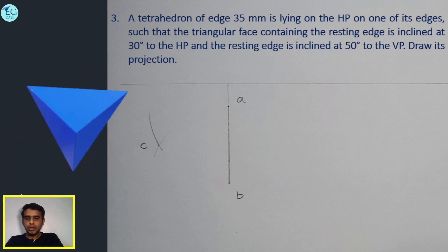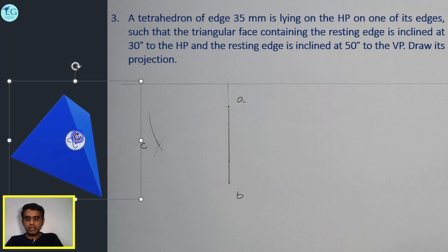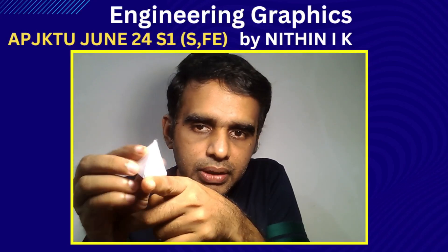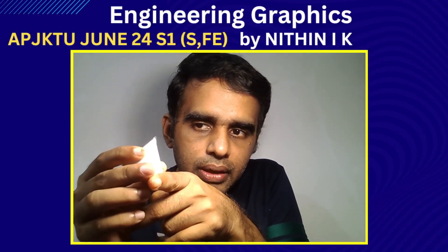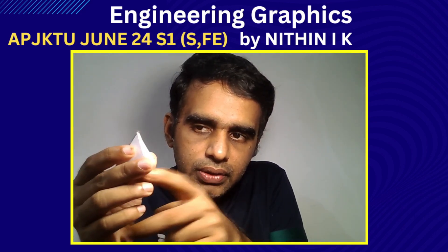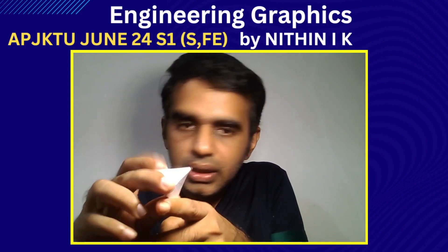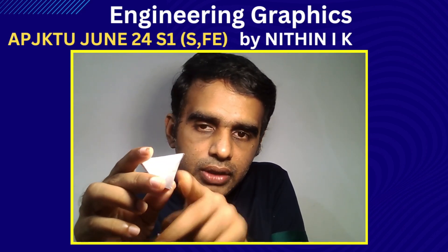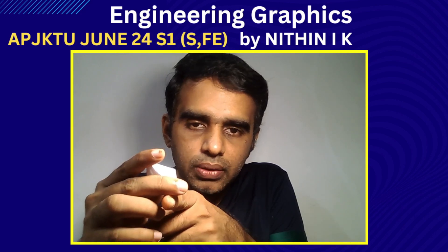A tetrahedron has four equilateral triangle faces. This is different from a triangular pyramid where the faces are not equal. The edge is resting on the HP, and we need to find the inclination of the face to the HP and the edge to the VP.